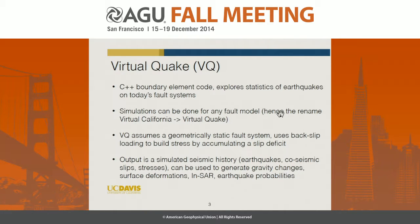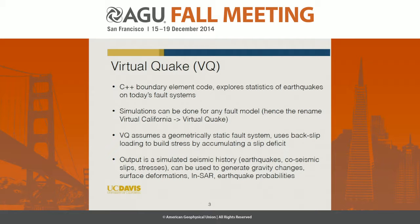Virtual Quake is a boundary element code written in C++, designed to explore seismicity on today's faults. Simulations can be done for any input fault model, and that's the reason why we're changing the name from Virtual California to Virtual Quake. Virtual Quake assumes a geometrically static fault system. We use backslip to load stress by building up a slip deficit. It's also a single layer elastic half-space model. We don't include any elastic discontinuities or viscoelasticity yet. The output from our simulations is a simulated seismic history — earthquakes, co-seismic slips, stress values — and we can use the simulation output to generate maps of gravity changes, surface deformations, InSAR interferograms, and earthquake probabilities.